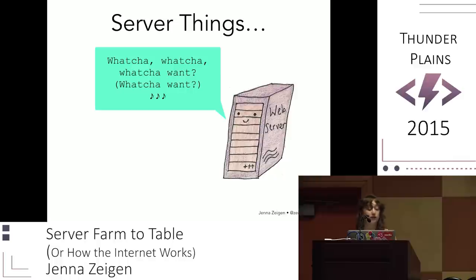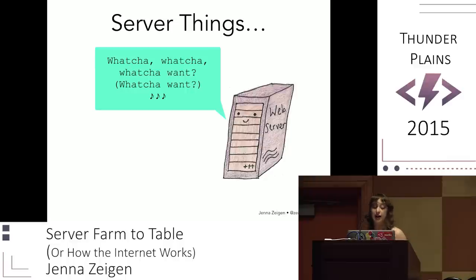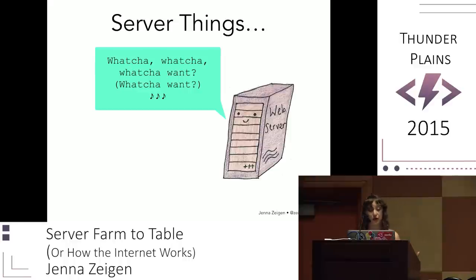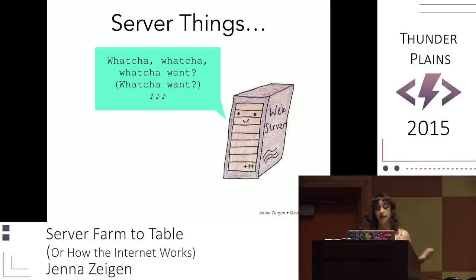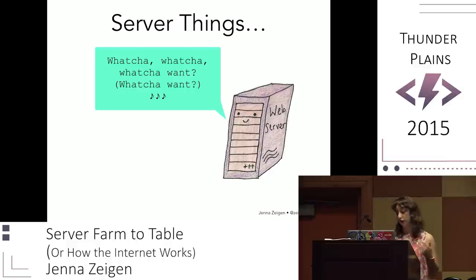I'm going to gloss over a bunch of server stuff because I'm more of a front-end person, but the server might do some load balancing, database stuff, and routing. The server is going to break down the request into parameters: the HTTP request method — which could be GET, POST, HEAD, PUT, DELETE, or OPTIONS (in this case it's going to be a GET request because we used the URL bar) — the domain, which is google.com, and the requested path, which is slash because no path was really requested, slash being the default path.